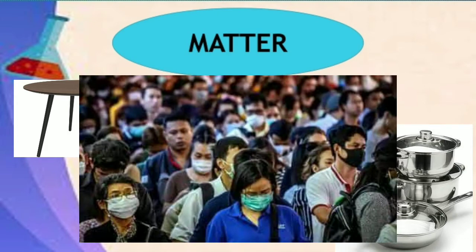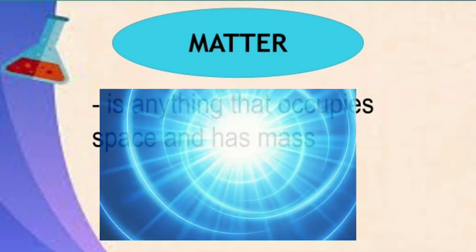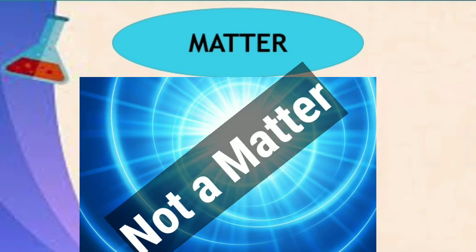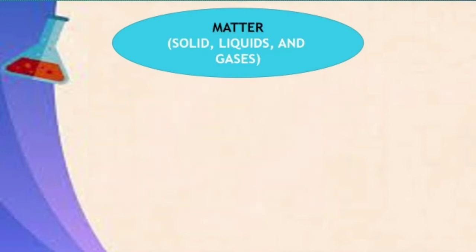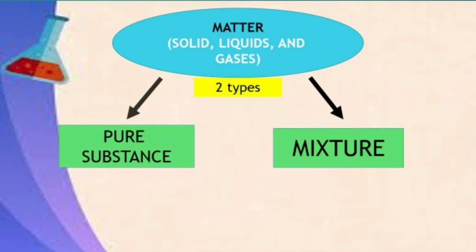Except light — light is a form of energy and neither has mass nor occupies space. There are four phases of matter: solids, liquids, gases, and plasma, and that would be for another lesson. Matter can be broken down into two categories: pure substance and mixture.